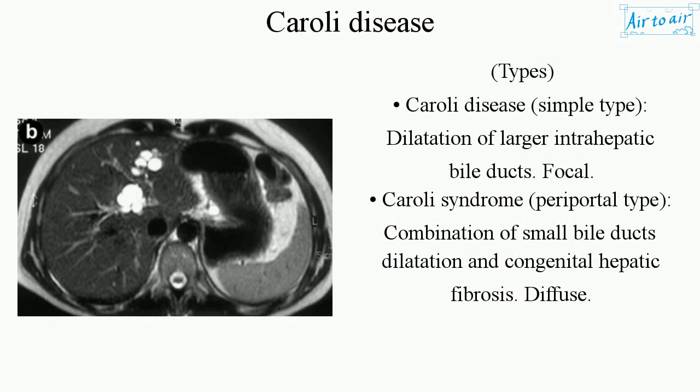Types: Caroli disease, simple type, involves dilatation of larger intrahepatic bile ducts. Focal Caroli syndrome, paraportal type, is a combination of small bile duct dilatation and congenital hepatic fibrosis — diffuse.